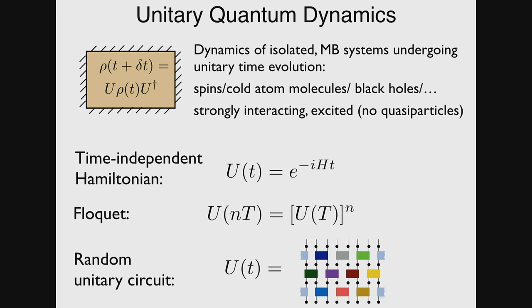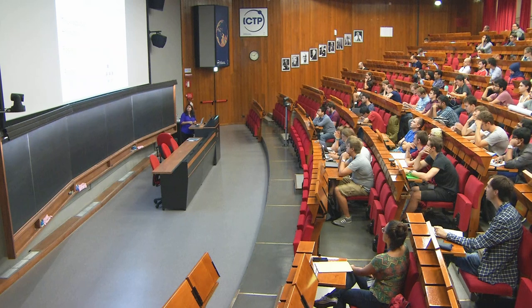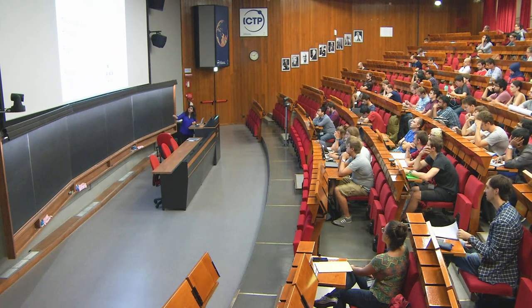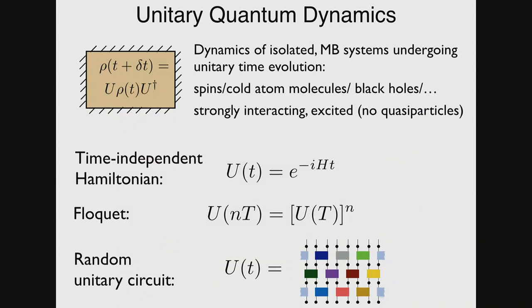We spent most of our time discussing the case of a time-independent Hamiltonian, where the unitary operator is generated in the usual way. I briefly mentioned periodically-driven or Floquet systems. Today, I'm going to spend a lot of time thinking about time evolutions generated by random unitary circuits. In this problem, we're making the time evolution random in space and in time — it's going to be extremely non-structured. The only features I want to retain are unitarity and locality.